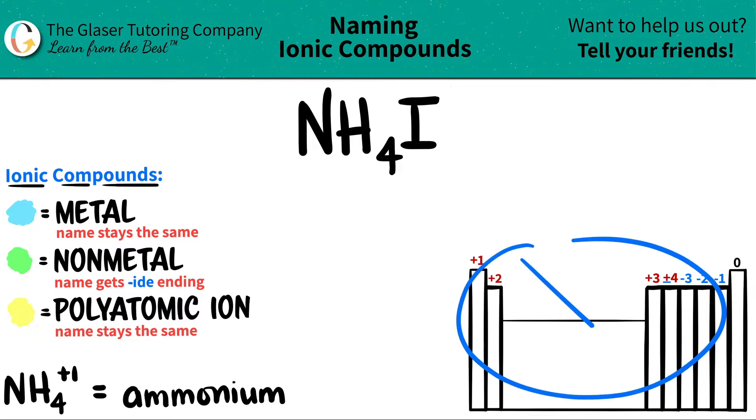Now, remember, polyatomic ions are never on the periodic table. You need to memorize them. So that's why I wrote down the polyatomic we're using here. Just use flashcards and try to memorize it.